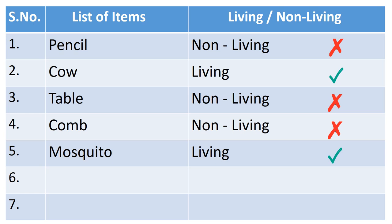Let's list them down together. Under the name 'items', I have mentioned a few common items. You can add as many as you wish. For example: pencil — it is non-living. Cow — definitely, it's a living organism. In the same way, you just have to list down the items and categorize them as living or non-living.